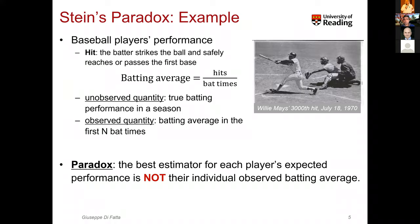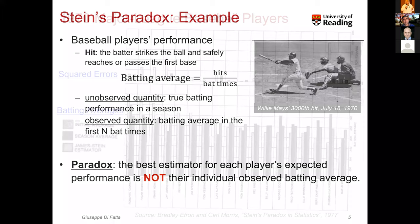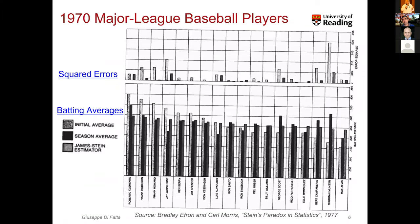The paradox here is that the best estimator for each player is not the simple average. This paper used data from the 1970 major league, in particular 18 players. In the chart at the bottom of this figure, you can see three bars for each player: one is the initial average, the second bar is the season average — the true performance at the end of the season — and the third bar is the James-Stein estimator. The upper chart shows the squared errors, and you can visually see that the James-Stein estimator is much better than the sample average.